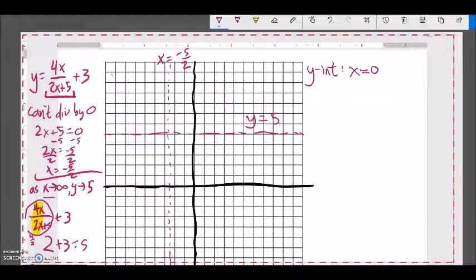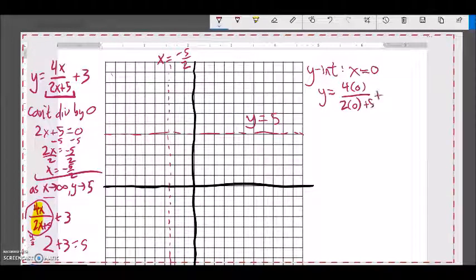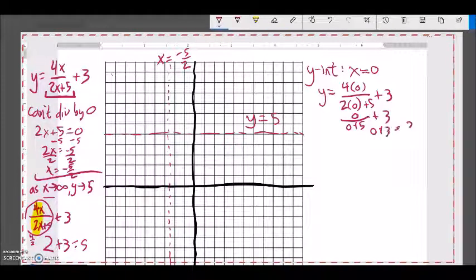So let me let x be 0, I'm going to plug it in. So, y would equal 4 times 0, x is 0, over 2 times 0, plus 5, plus 3. Notice this is 4 times 0, 0, divided by 2 times 0, plus 5, sorry, that should be a plus, plus 3. This is just 0. 0 plus 3 is 3.